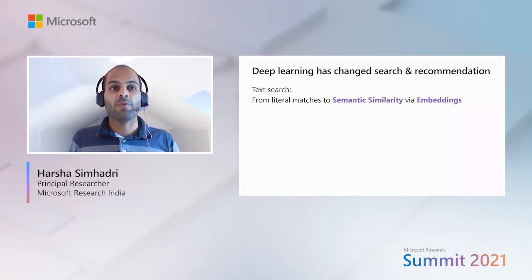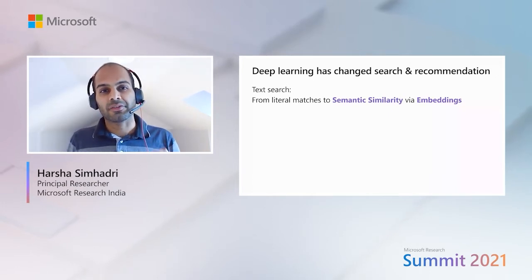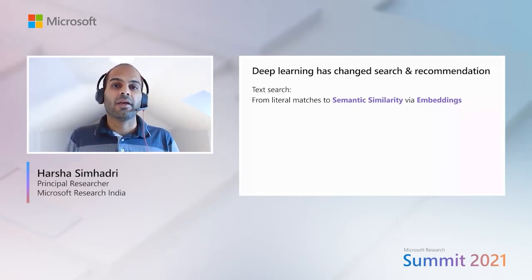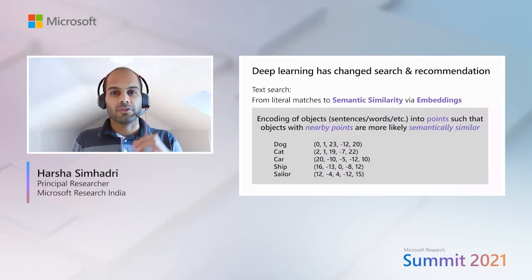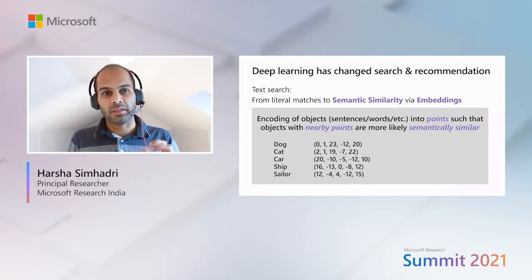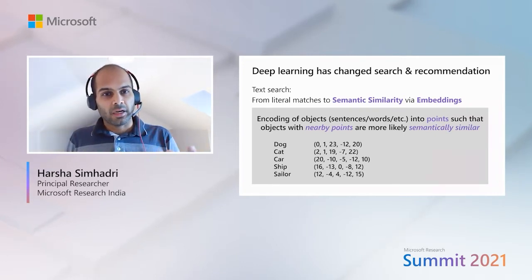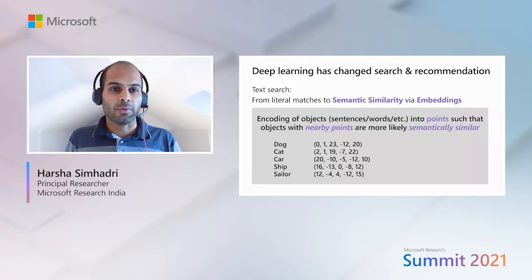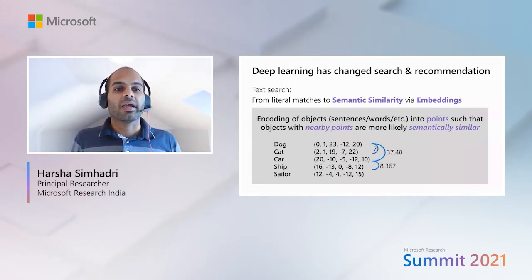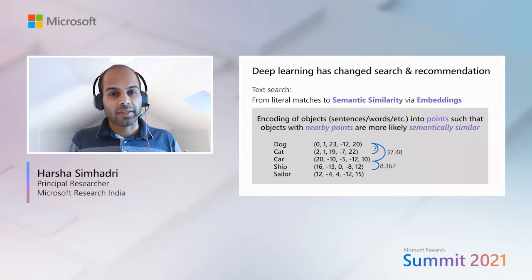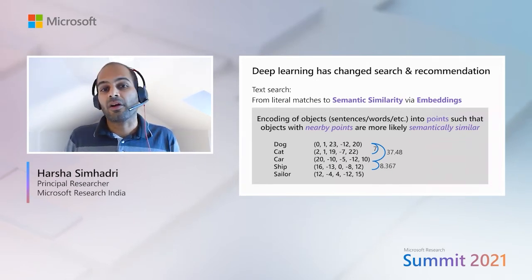To take text search for example, we're moving away from literal matches to semantic similarity based matches via embeddings. Embeddings are encodings of objects such as sentences or words into points in a geometric space so that objects that are nearby are more likely to be semantically similar. Here's a simple illustration of a few words embedded in a five-dimensional space, and as you can see, the Euclidean distance between the pair of dog and cat is smaller than the less semantically similar pair of dog and car.